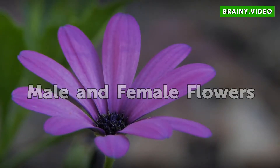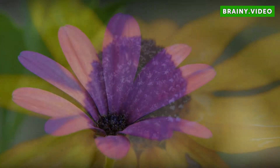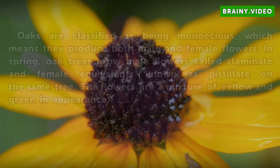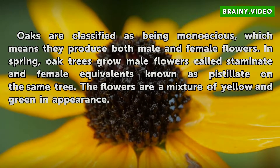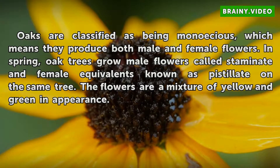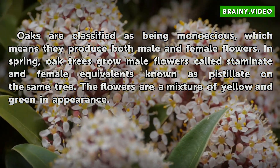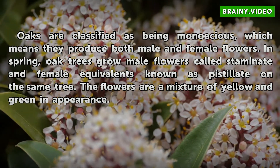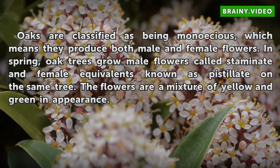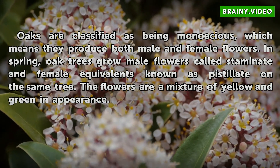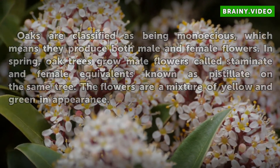Male and Female Flowers. Oaks are classified as being monoecious, which means they produce both male and female flowers. In spring, oak trees grow male flowers called staminate and female equivalents known as pistillate on the same tree. The flowers are a mixture of yellow and green in appearance.